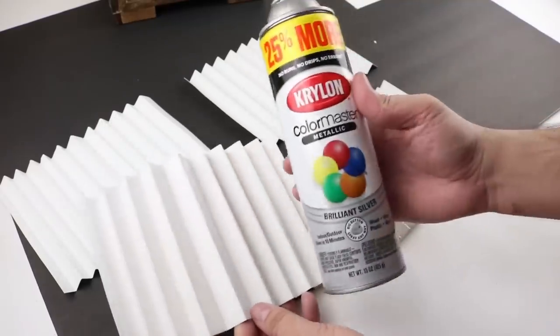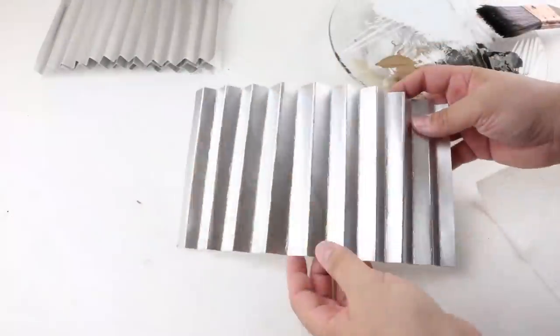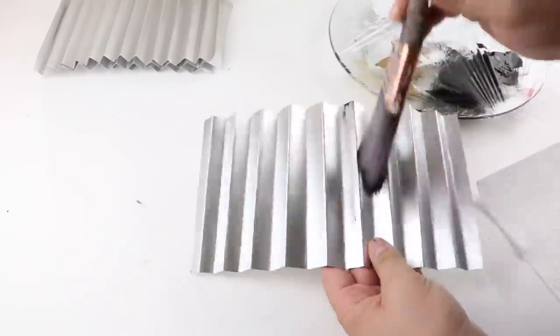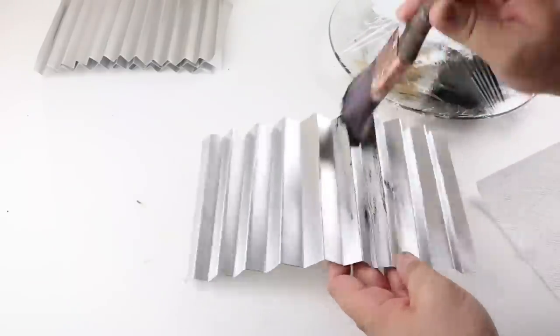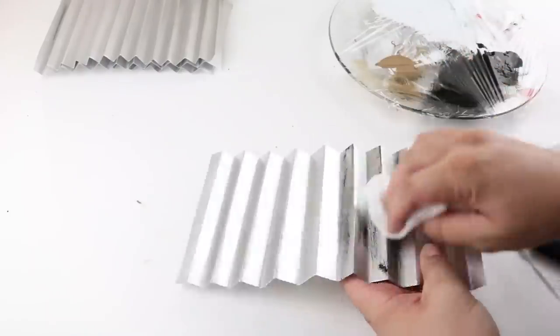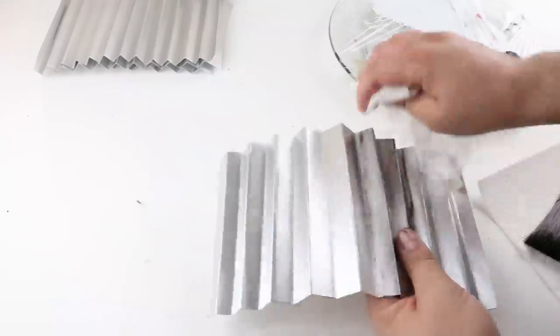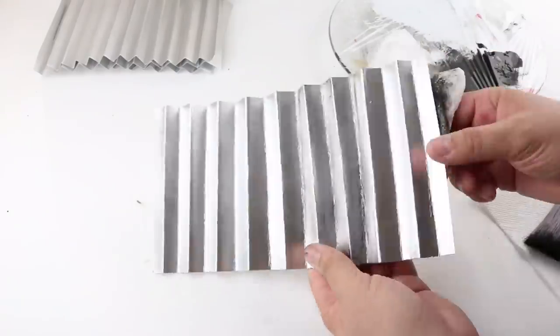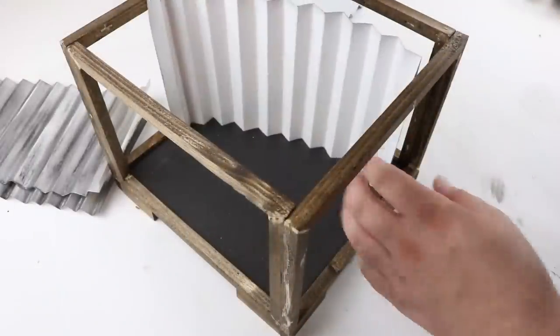Once all our pieces are folded, we can go ahead and use this brilliant silver spray paint. That's going to give us the base for our metal look. To distress it and give it more of a metal look, I'm using this ink chalk paint from Waverly. We'll have a link for that in the description below. I like to dry brush it on and then use a wet and dry paper towel to blend it in and give it a little bit more of a refined look so there's not those harsh paint strokes.